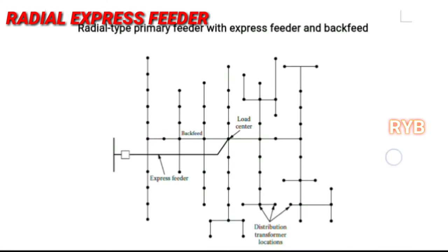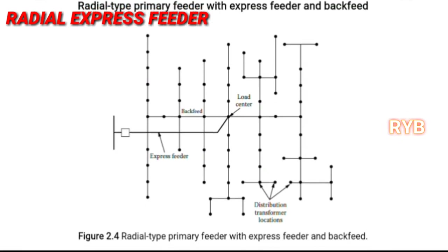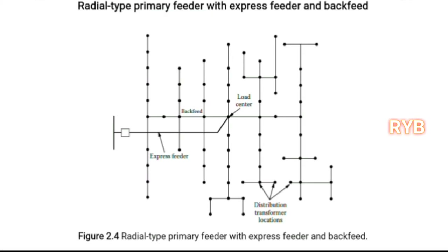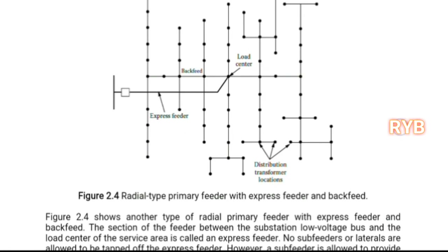Another important type is the radial primary feeder with express feeder and back feed. The express feeder goes directly from the substation LV bus to the load center without any tapping — similar to an express bus with fewer stops. The express feeder has a thicker conductor size, while laterals, sub-laterals, and distribution transformer locations are similar to other types. Dotted lines represent the express feeder with distribution transformer locations.